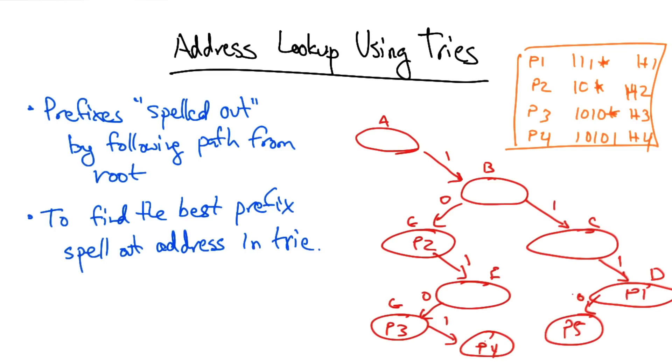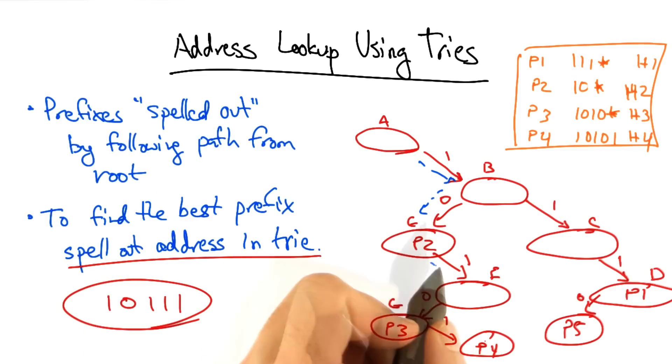Lookups are easy. So for example, let's suppose we want to look up 1 0 1 1 1. Well, all we have to do is spell this out in the trie. So we can follow 1 0 1,